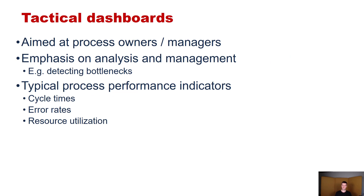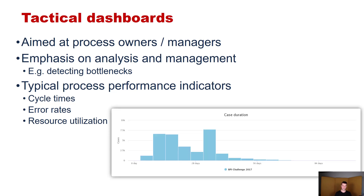The second category — and the most important category for this lecture series — is tactical dashboards. These are aimed at process owners and managers, with emphasis on analysis and management, for example detecting bottlenecks. Typical process performance indicators on those dashboards include cycle times, error rates, and resource utilization. An example visualization shown here displays case duration and the distribution of those case durations in the current dataset. A wide variety of such visualizations will be covered in the next part of this lecture.